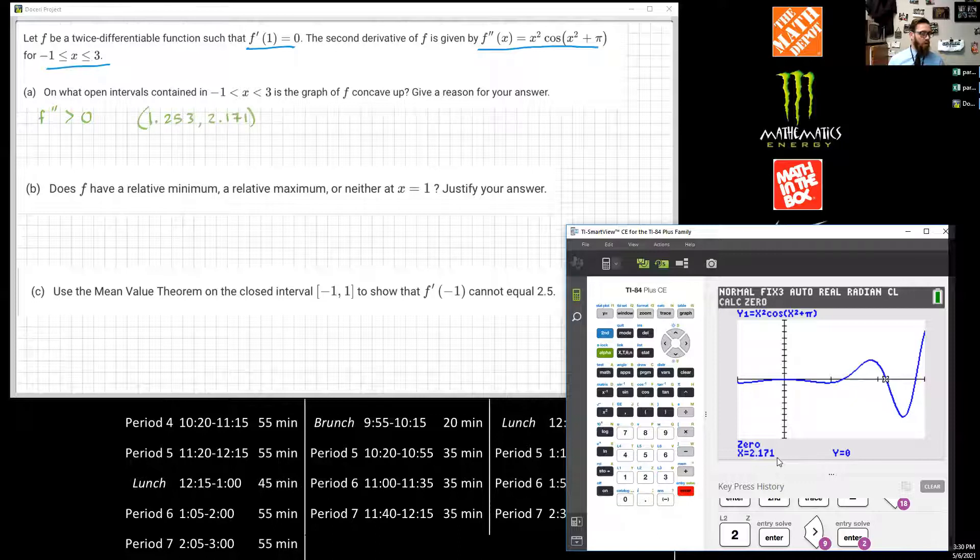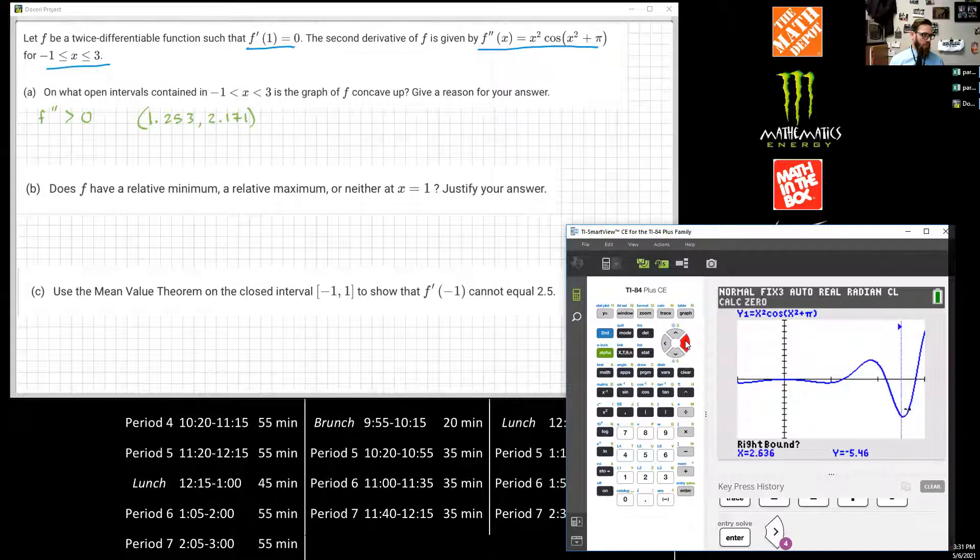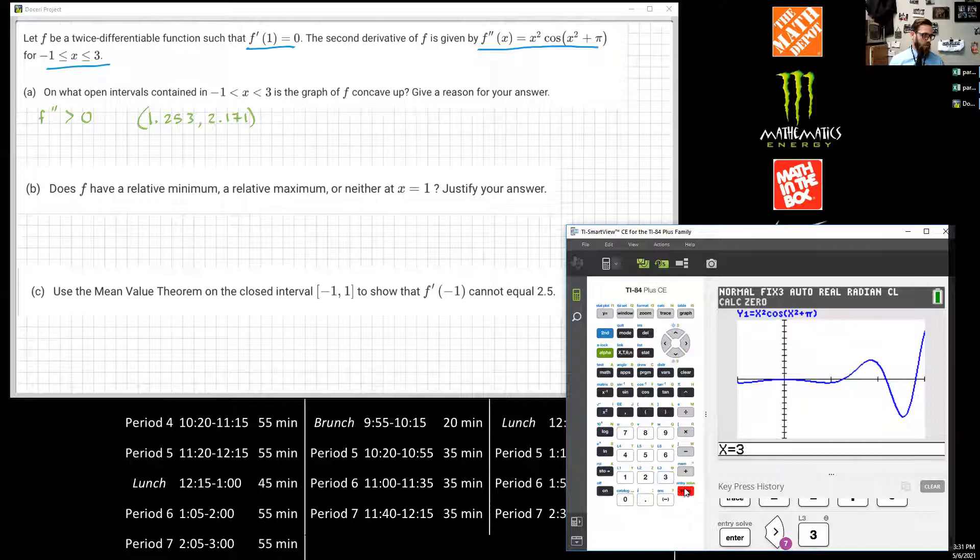And the last one, we just need to know this x-intercept. So let's do that. We'll go second, calc, and zero. And I'm going to put in 2.5 because it looks like that would work. 2.5 is my left bound. Boom. And then my right bound, I can put three, I guess. Three. Yeah, let's do that. Three. And then guess. And boom. 2.802. And then we go to three. So I don't need to find the other one because that's the end of our window. So we have 2.802. I said 2.803. Oh, well.